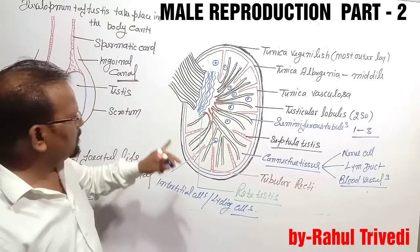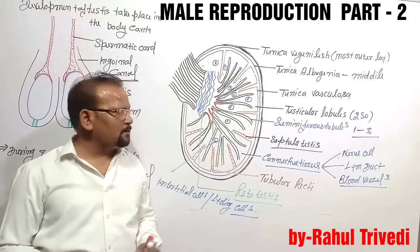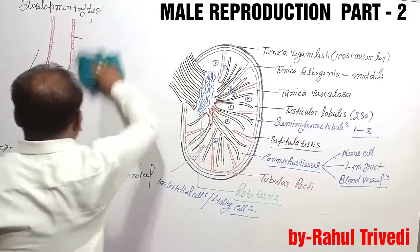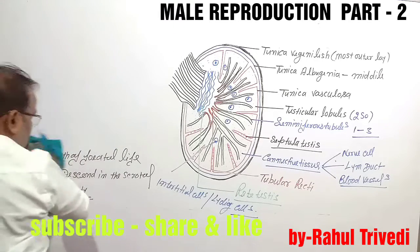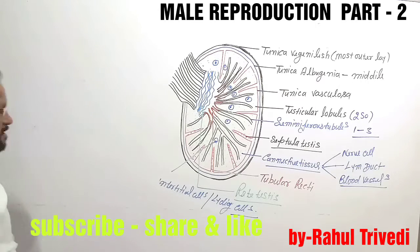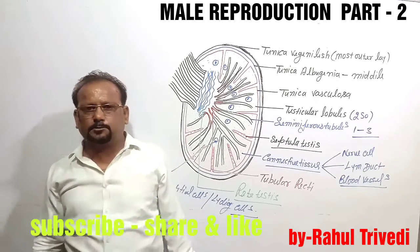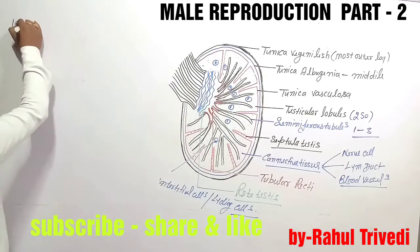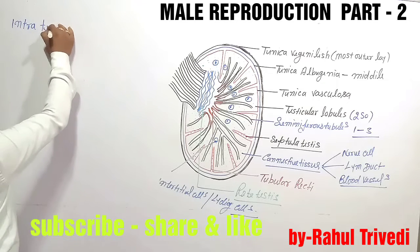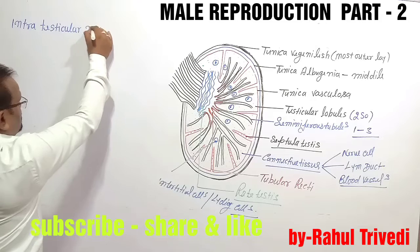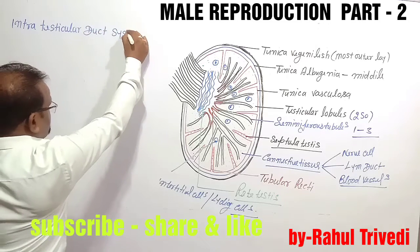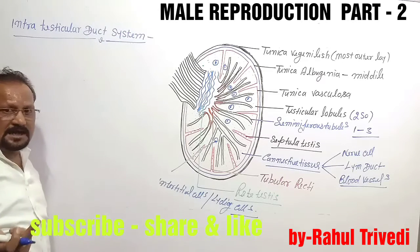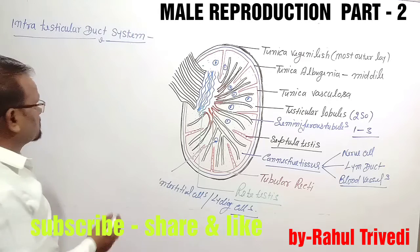Now let us discuss the intra-testicular duct system. The intra-testicular duct system refers to which ducts are present inside the testis. A common exam question asks us to arrange these ducts in the correct serial order.